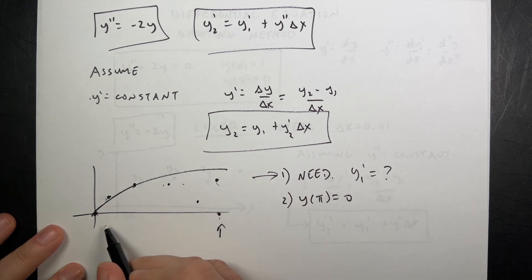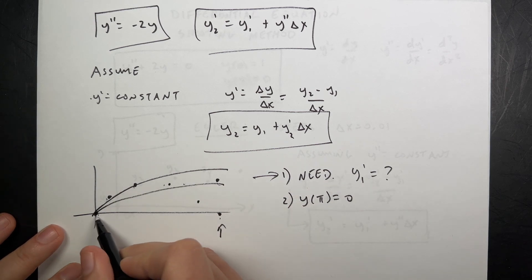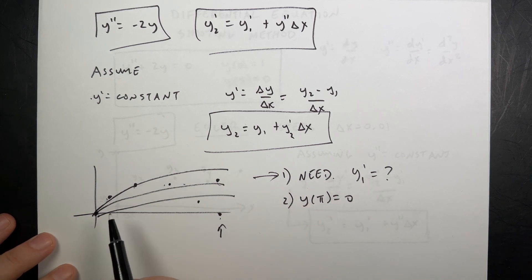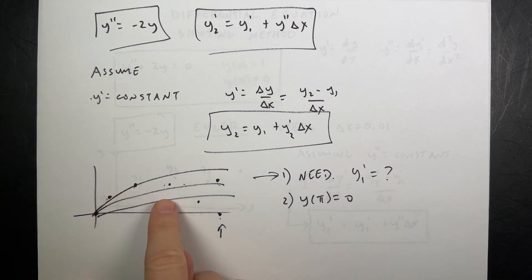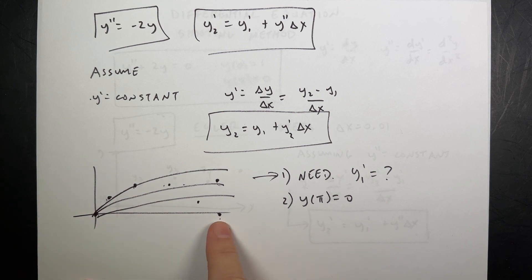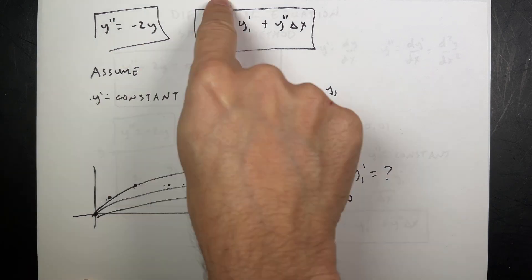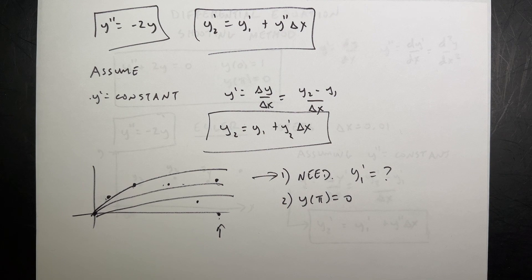If it's not at the right boundary conditions, we change that and do it again. That's why it's called a shooting method. Imagine you shoot and it's not right, so you do it again — keep changing it until you do get it right. It's like throwing a basketball at a goal, and you miss short, so you shoot a little bit further each time. So let's do this in Python, because if I want to break this into 0.01 steps going from zero to pi, that's a lot of calculations and I don't want to do that manually.